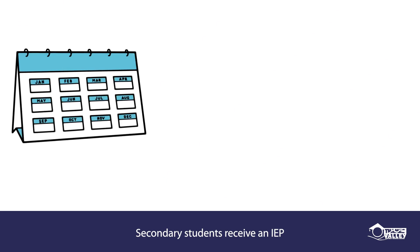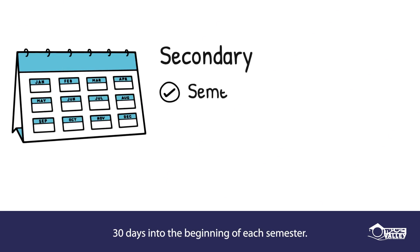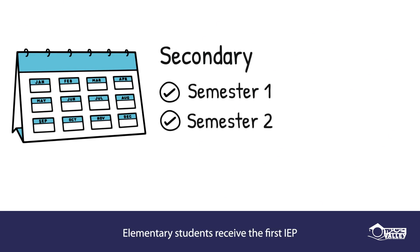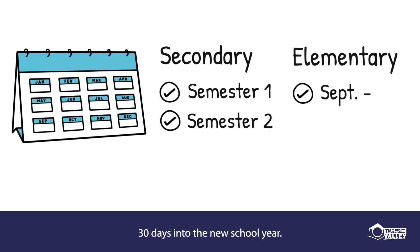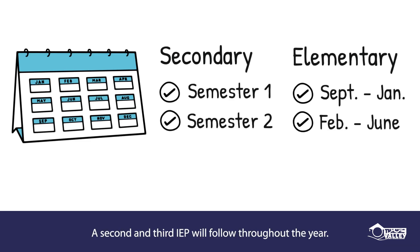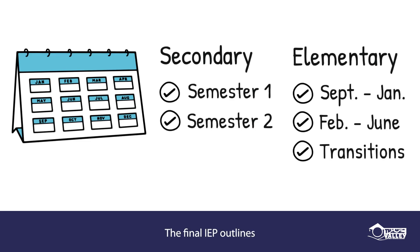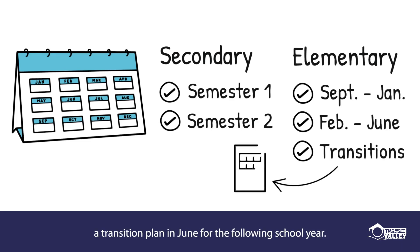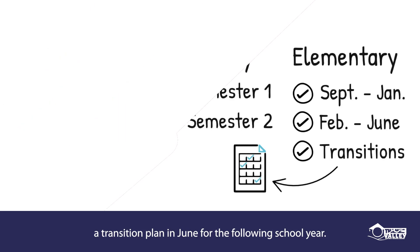Secondary students receive an IEP 30 days into the beginning of each semester. Elementary students receive the first IEP 30 days into the new school year. A second and third IEP will follow throughout the year. The final IEP outlines a transition plan in June for the following school year.